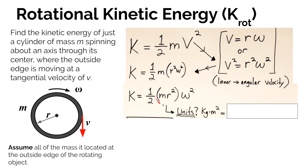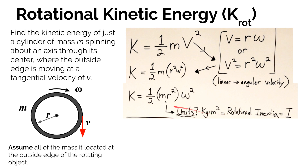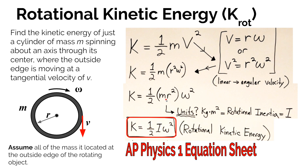The units of the term in parentheses — mass times radial distance squared — are kg·m², which are the units of rotational inertia. So if all the rotating mass is at a common radial distance, the rotational inertia is I = mr². Substituting, the rotational kinetic energy equation becomes KE = ½Iω². This gives us an equation to calculate the joules of energy stored for any spinning object, as long as we know its rotational inertia and angular velocity.